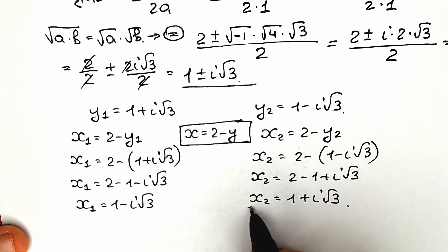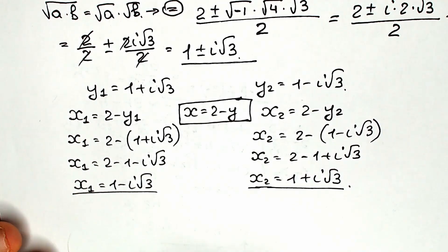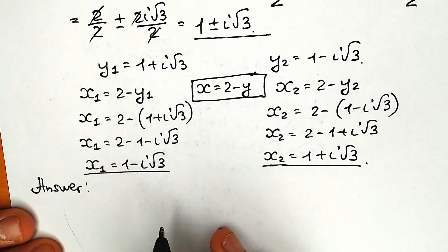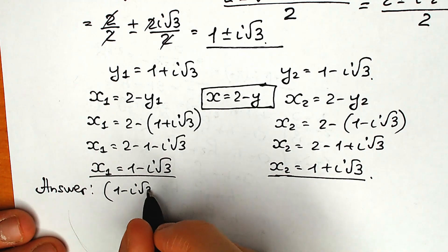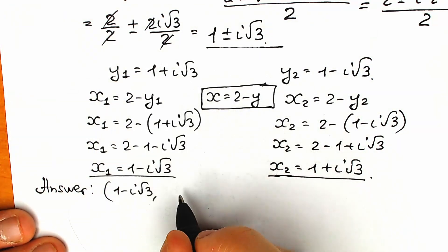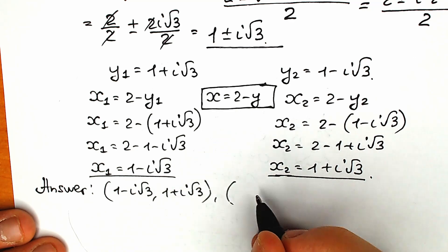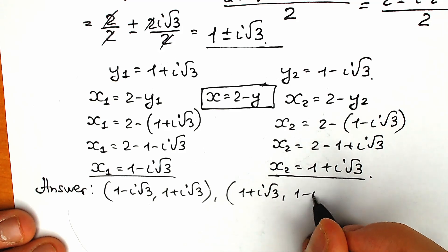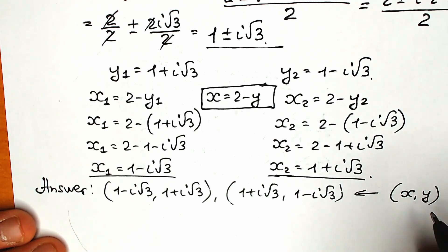So we have our pairs. Our answer: the first pair is x₁ equals 1 minus i square root of 3 and y₁ equals 1 plus i square root of 3. The second pair is x₂ equals 1 plus i square root of 3 and y₂ equals 1 minus i square root of 3.